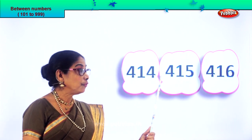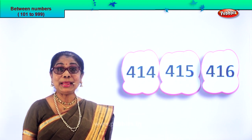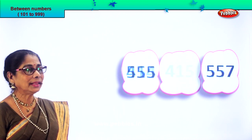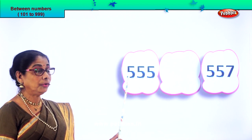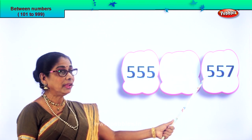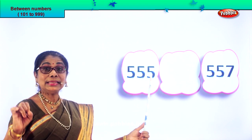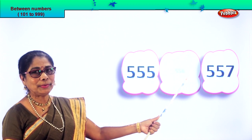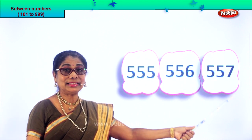The middle number is 415. You are able to find the number between. Let's go to another set of numbers. Read the number aloud: 555 and 557. After 5 comes 6, after 55 comes 56. So the next number will be 556, then 557.